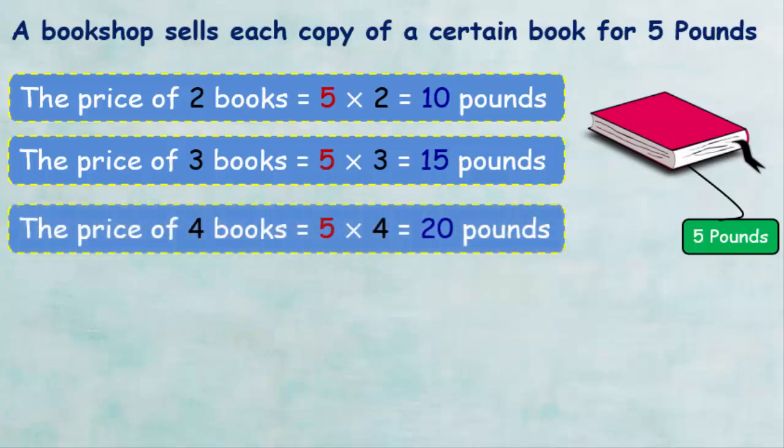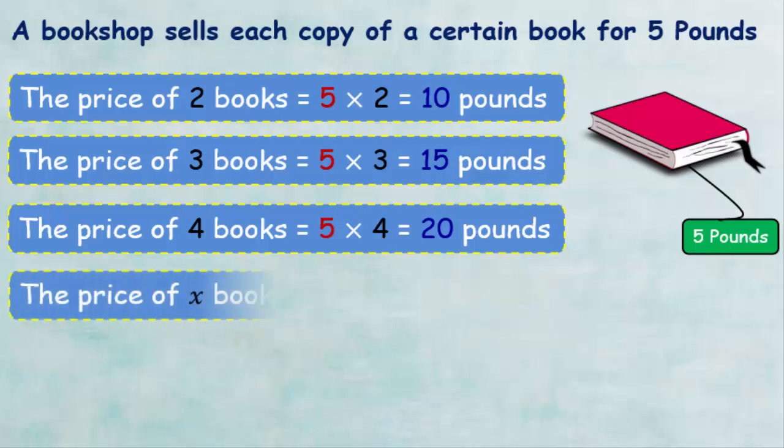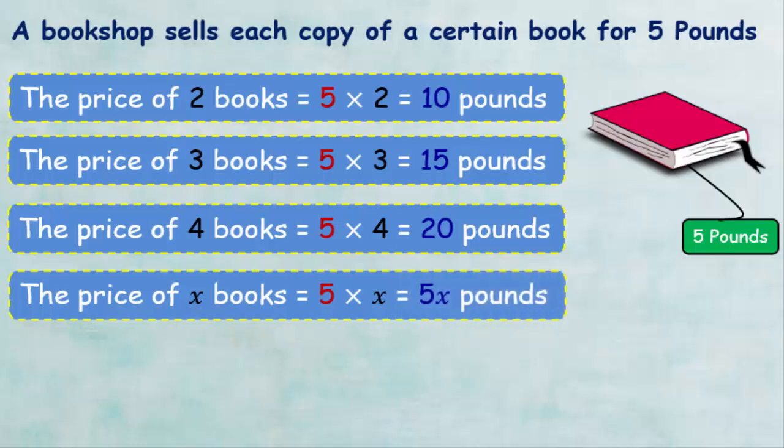In the same way, the price of four books equals 5 times 4, which equals 20 pounds. And finally, if the number of books is unknown and the symbol X refers to it, we can say that the price of X books is equal to 5 times X, which equals 5X pounds.